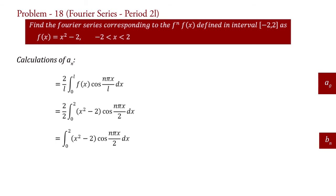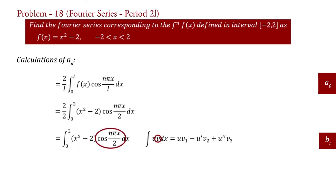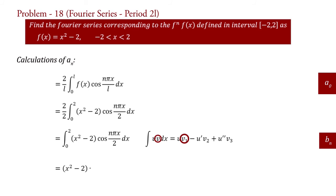To integrate we will apply the formula of integration by parts, i.e., integral u v dx equal to u v1 minus u dash v2 plus u double dash v3. If we compare this integral with this one, then here u equal to x square minus 2 and v equal to cos n pi x upon 2. By applying this formula, we can write a_n equal to x square minus 2 into v1, that is integration of v: sin n pi x upon 2 upon n pi by 2, with limit 0 to 2.